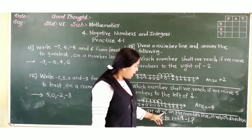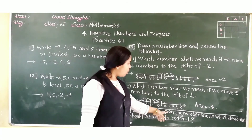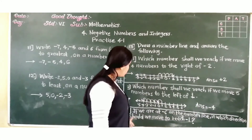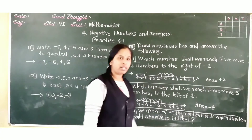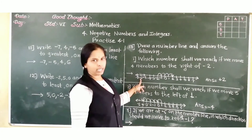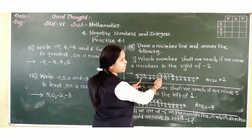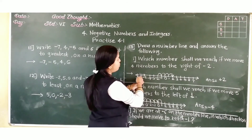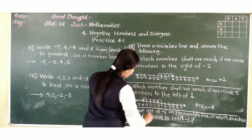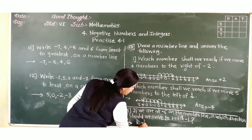If we are at minus 6 on the number line, in which direction should we move to reach minus 1? Minus 1 is to the right side of minus 6. So we have to move in the right direction. In this way we have to solve these questions.